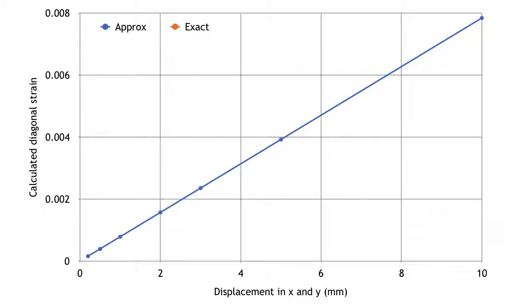I did the same inputs and calculated the exact solution, which is the orange line. As you can see, there is a difference, but the difference is very, very small. That's why it's okay to use that approximation.